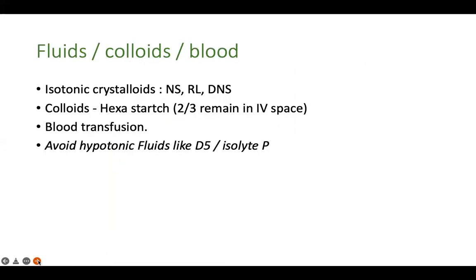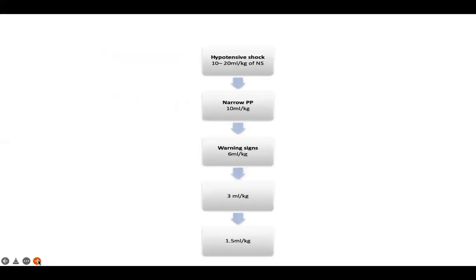The main management in dengue is fluids, fluids, and fluids — using crystalloids or blood depending on the clinical situation. Avoid hypotonic fluids; do not use D5 or isolyte P for resuscitation. Use isotonic crystalloids — normal saline or Ringer's lactate, or DNS if resuscitation is prolonged. The key concept: the rate of fluid administration should match the rate of capillary leak.